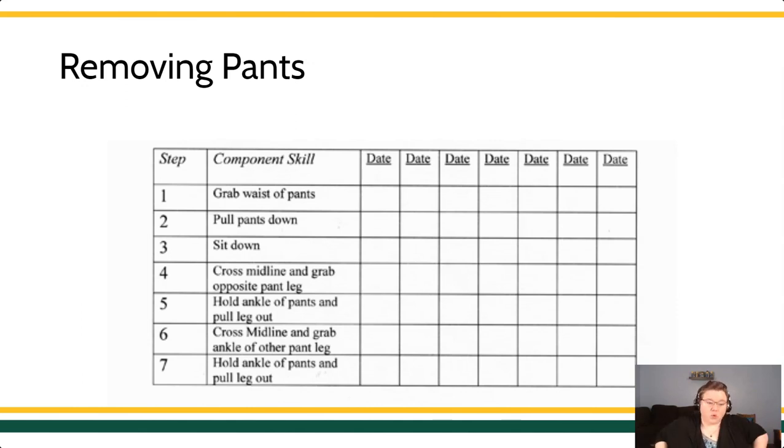Step one, grab those pants. Grab them by the waist. Next, pull your pants down. Now you need to take your pants off. You probably don't want to fall over. Maybe you've got some mobility stuff, so we're going to have you sit down next. Then we're going to have you reach across the midline, grab a pant leg, pull it off. Then we're going to hold the ankle of the leg and pull your feet out. So you are breaking down a task that we all take for granted, that we all do very simply every day, and you are bringing it down into the most simplistic terms possible.